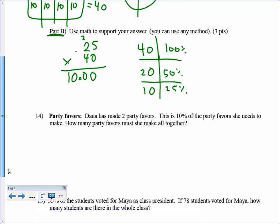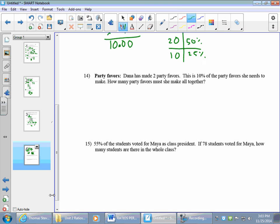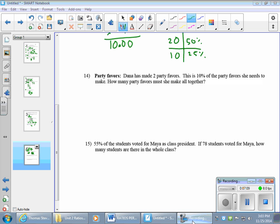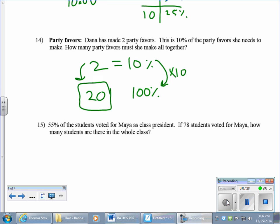All right, party favors. Where's my little... oh here it is. Top 7 minutes, darn it. All right, party favors. Jane has made 2, that equals 10 percent. What's 100 percent? How many times does 10 go into 100? 10 times. 2 times 10 is 20. She needs to make 20 favors.